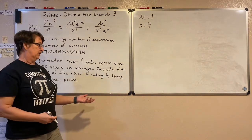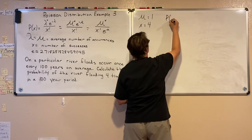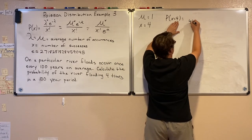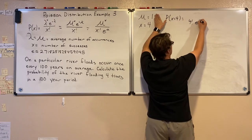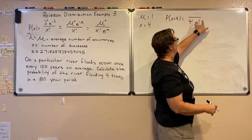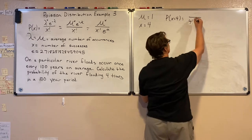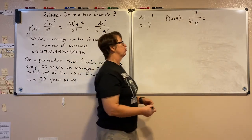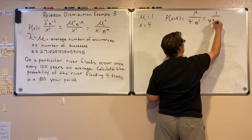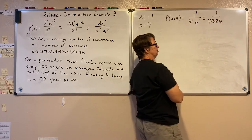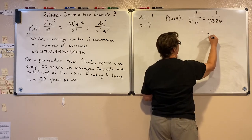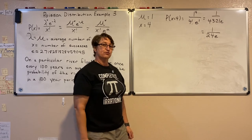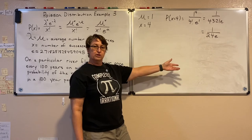Substituting into the formula: probability of x=4 equals 1 to the fourth power over 4 factorial, times e to the first power. 1 to the fourth is still 1. 4 factorial is 4×3×2×1 = 24. e to the first power is just e. So we have 1 over 24e in exact form. If asked for exact form, leave it as 1 over 24e.